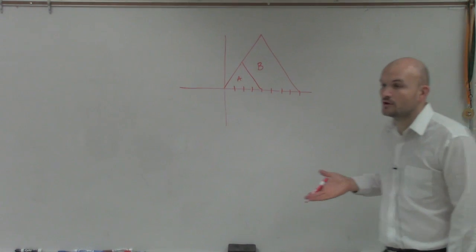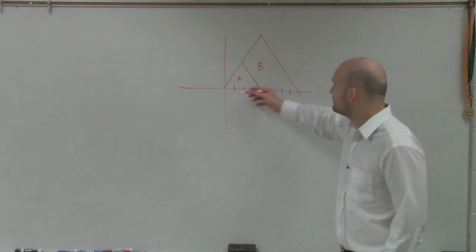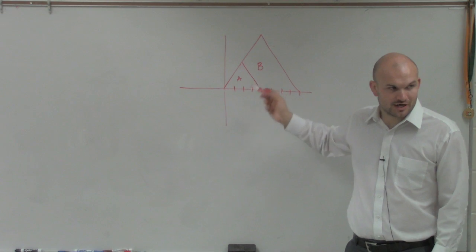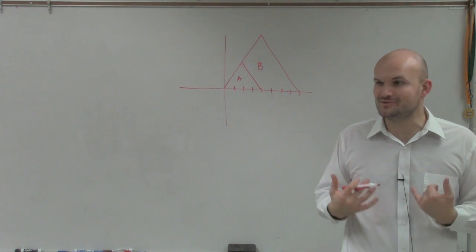And we want to see, is this going to be an enlargement or a reduction? Well, I think it's pretty obvious, ladies and gentlemen. A represents this small triangle, and B represents the larger triangle. So going from a smaller triangle to a larger triangle, are we enlarging it or reducing our triangle?